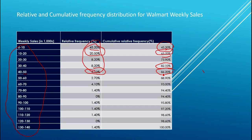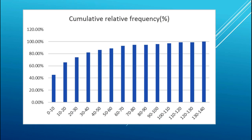Here's a graph of the cumulative relative frequency distribution. You can see that the cumulative relative frequency distribution graph never falls, because we're adding numbers cumulatively, so it continues to rise until it approaches 100% of the observations.